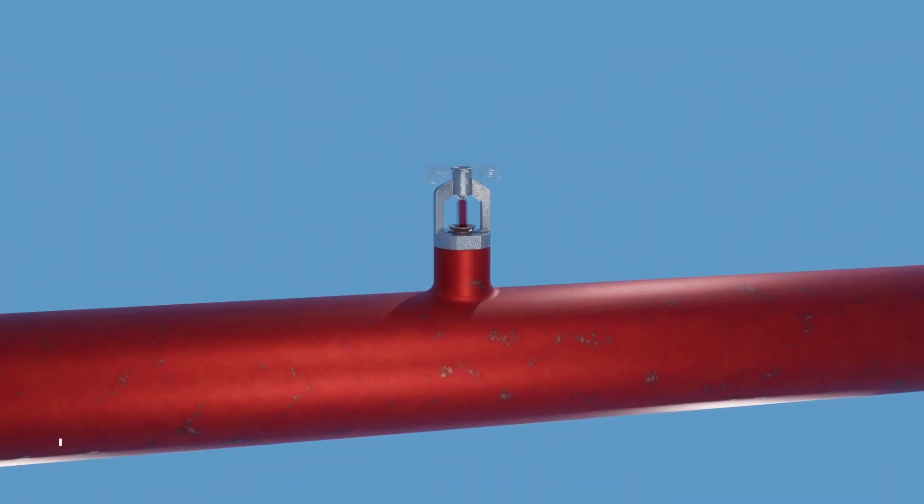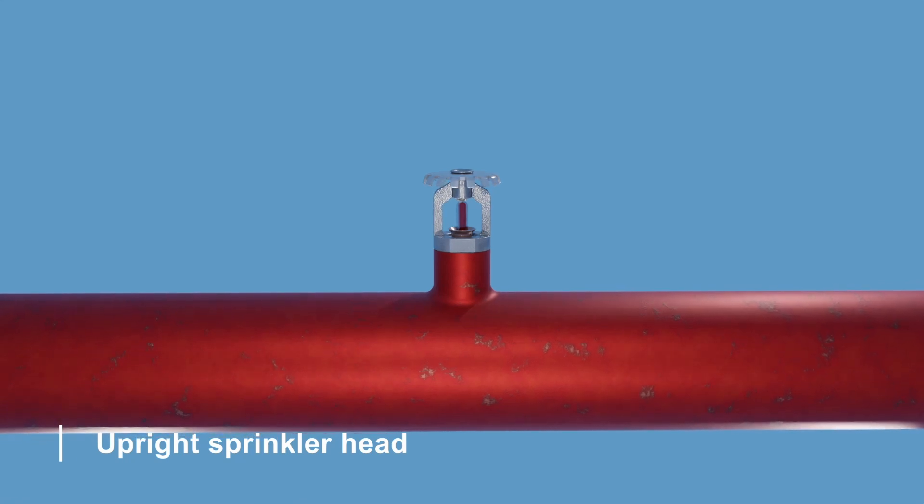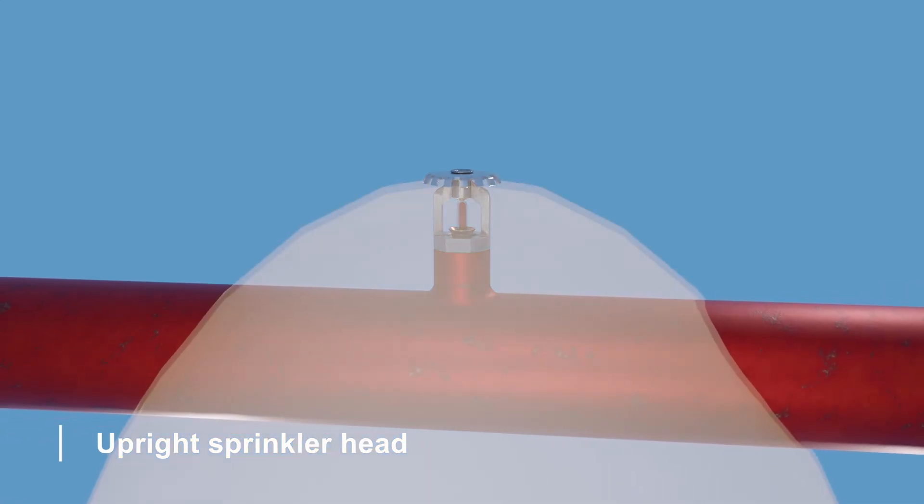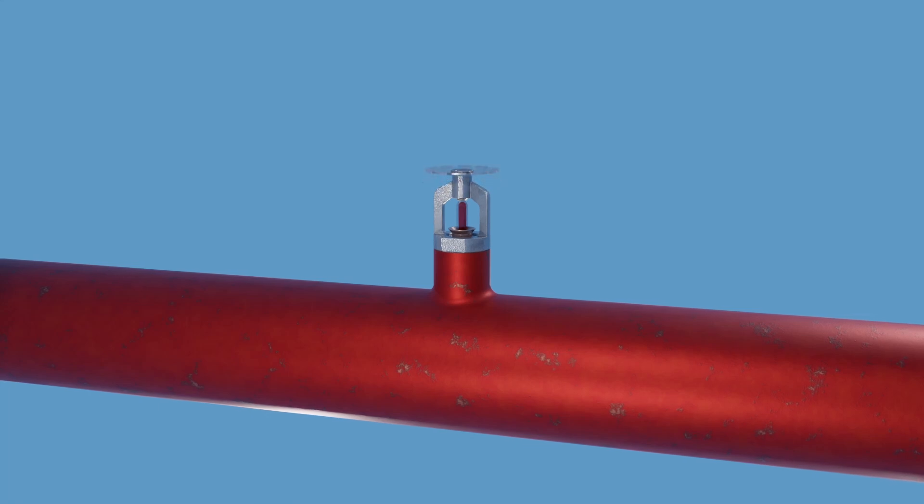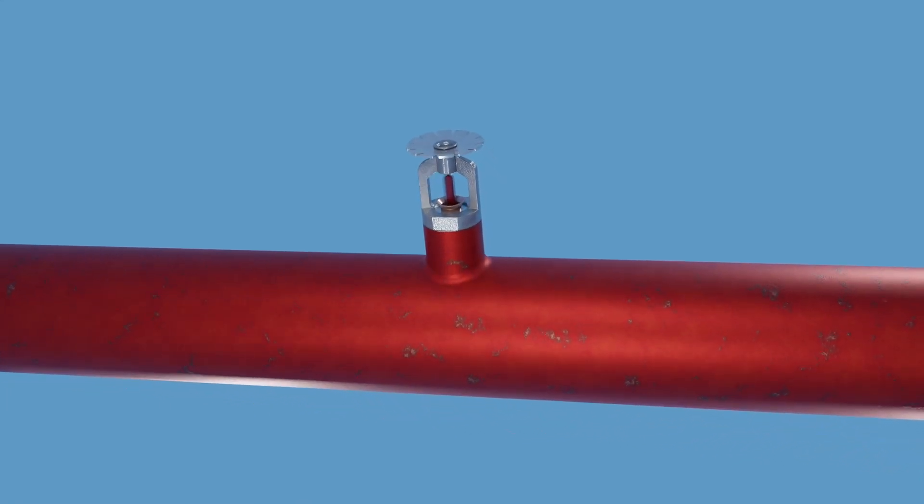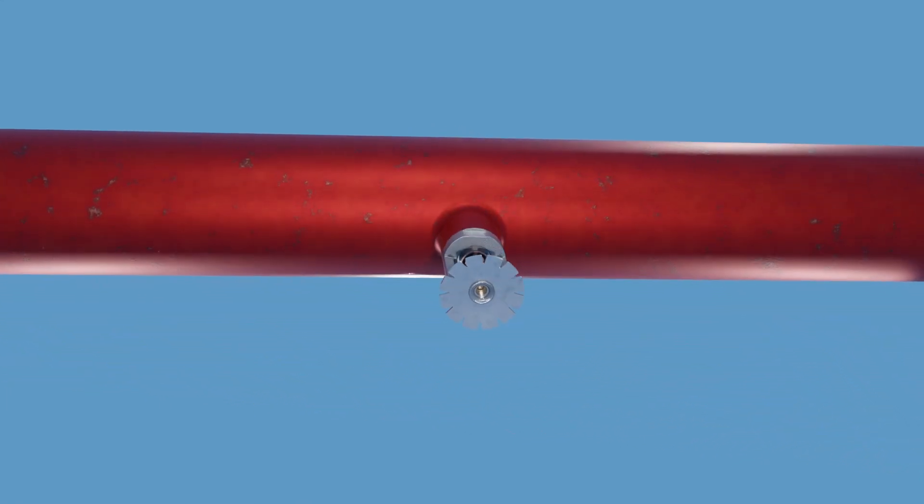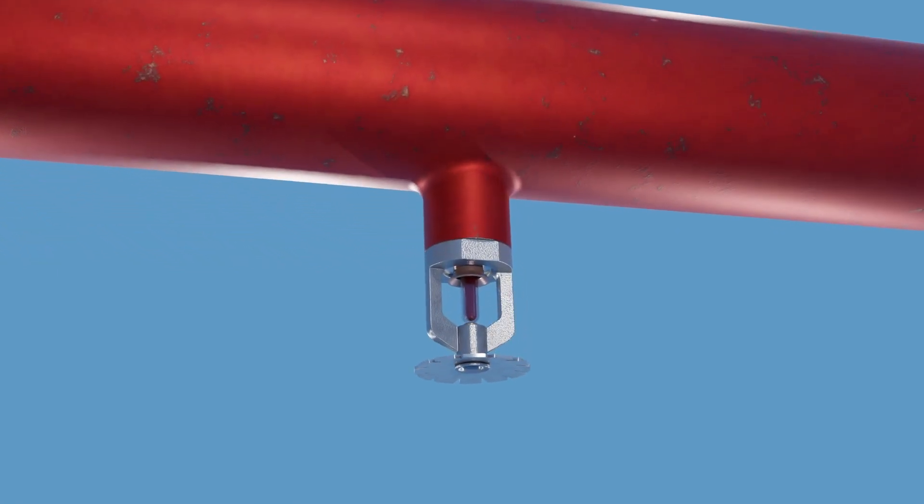The upright sprinkler head is installed with the deflector up and directs water upward and outward in a dome pattern using a concave deflector. Pendant sprinkler heads are used in areas where the ceiling is accessible, while upright types are commonly used where the ceiling is not accessible.